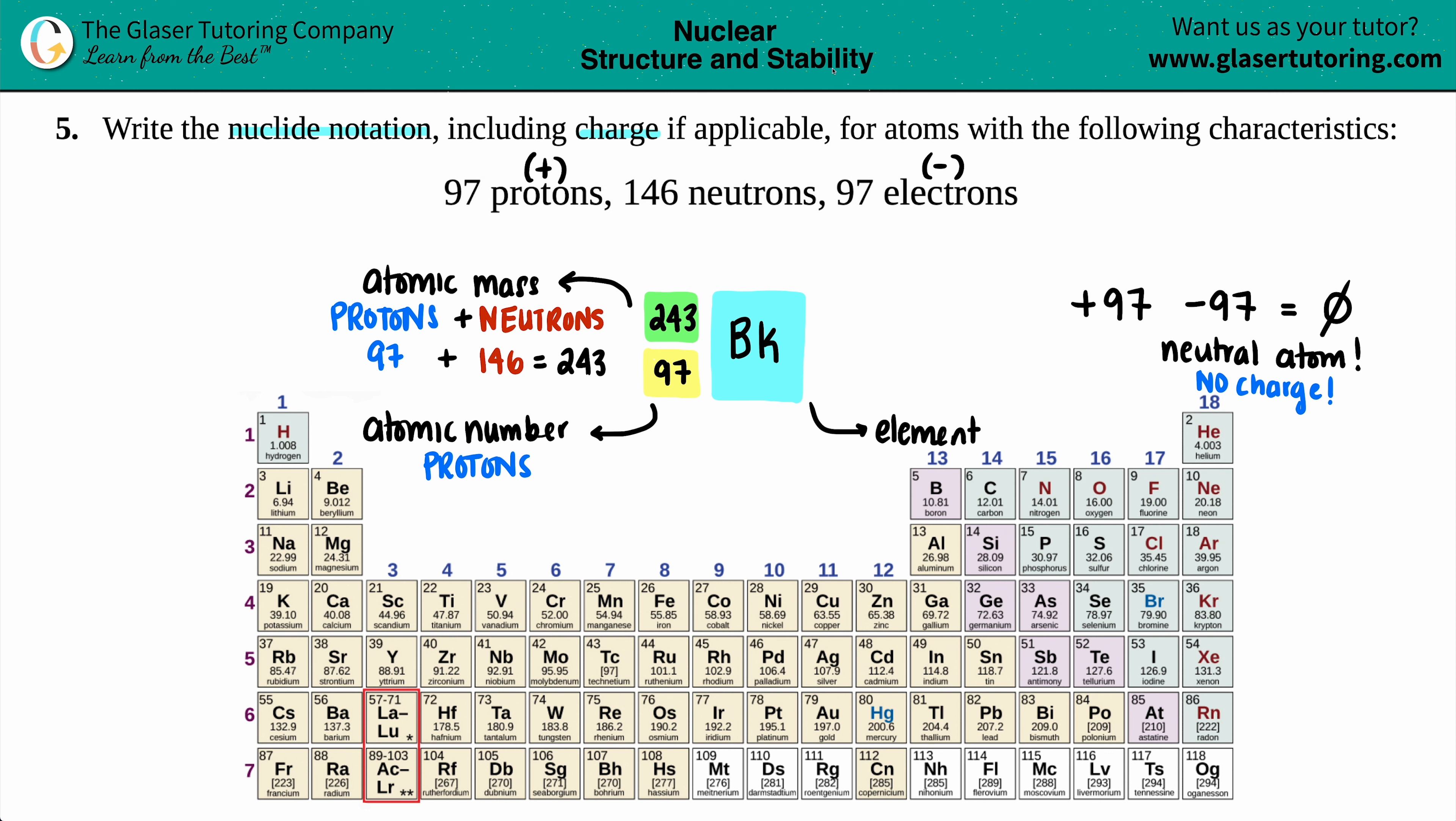But let's see, that looks good. But anyway, the rest for this question is all done. So you have three boxes for this, no charge. So nothing in the upper right-hand corner. But you have Bk 97 on the bottom, 243 up top, and maybe I'll just pull this over. There we go. And that's it.